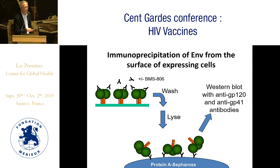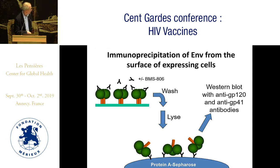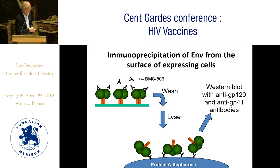This is a cell-surface envelope immunoprecipitation. We take envelope glycoproteins on the surface of expressing cells and incubate them with various neutralizing and non-neutralizing antibodies in the presence or absence of BMS-806, the parental compound. The cells are washed to remove unbound antibodies, then lysed, and the envelope-antibody complexes are captured on protein A Sepharose. The captured envelope glycoproteins are then western blotted with anti-GP120 or anti-GP41 antibodies, so we can see what envelope forms are being recognized.